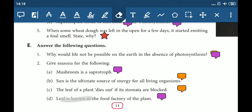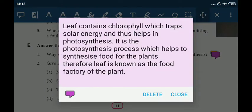Leaf is known as the food factory of the plant. Leaf contains chlorophyll which traps solar energy and thus helps in photosynthesis. It is the photosynthesis process which helps to synthesize food for the plants. Therefore, leaf is known as the food factory of the plant.